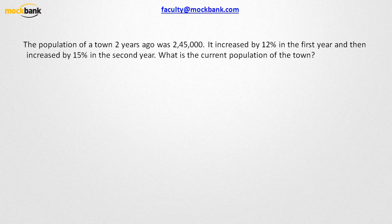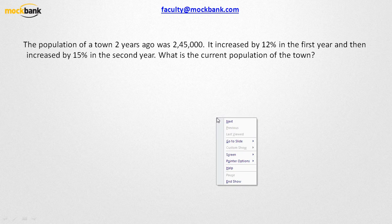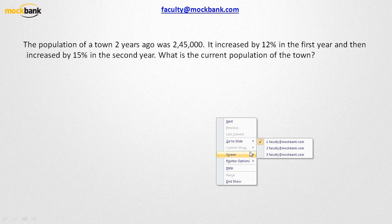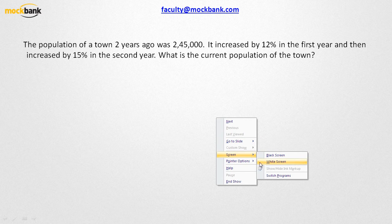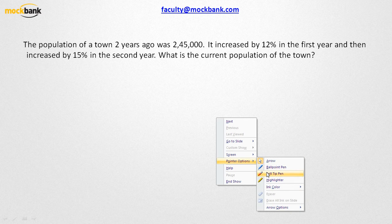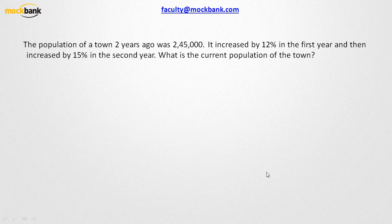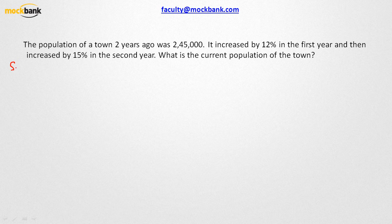In this problem, what are they talking about? There is a village or a town. The population is given as 2,45,000 and this population is increasing by 12% in the first year and 15% in the second year. What is the meaning of population getting increased by 12% in the first year and 15% in the second year? This is nothing but a successive change.